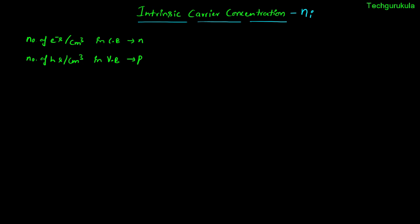In an intrinsic semiconductor, the number of electrons in the conduction band is equal to the number of holes in the valence band. So we can say the carrier concentration in the conduction band, N, equals the hole concentration in the valence band, P. For intrinsic semiconductors, N equals P, and we define this to be equal to Ni — the intrinsic carrier concentration — which doesn't distinguish electrons from holes because both are the same.